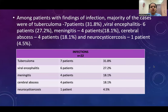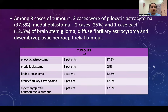Among patients with findings of infection, majority were of tuberculoma at 31.8%, followed by viral encephalitis in 6 patients, meningitis in 4 patients, cerebral abscess in 4 patients, and neurocysticercosis in 1 patient.